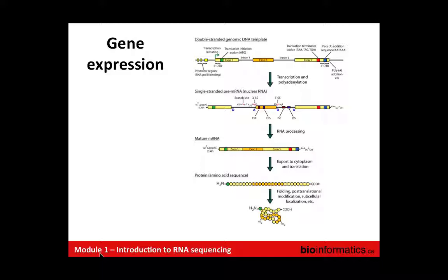The gene gets transcribed by a polymerase into an RNA molecule and polyadenylated in the nucleus. You wind up with a single-stranded pre-mRNA molecule that still has introns in place between the exons. Various features allow splicing to occur: donor sites, acceptor sites, exonic and intronic splicing enhancers and silencers. A complicated splicing machinery recognizes these features and removes the introns, splicing the exons together to give a mature mRNA molecule.